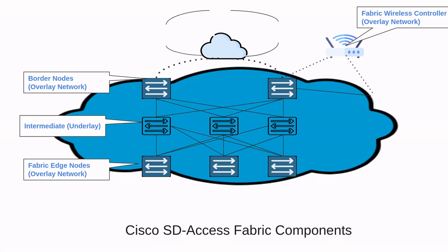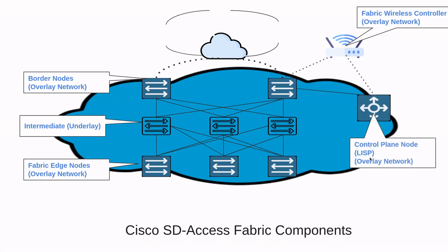We have our control plane node, which is LISP, part of the overlay network. LISP stands for Locator ID Separation Protocol. What it does is simplify traditional routing environments by eliminating the need for each router to process every possible IP destination address and route. LISP is our control plane, and VXLAN is our data plane, running all the tunnels between the fabric edge nodes and the border nodes.